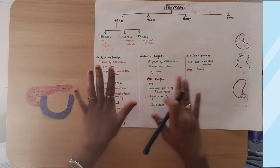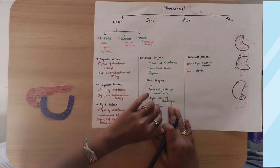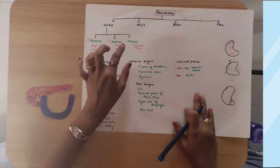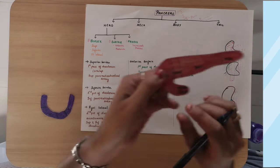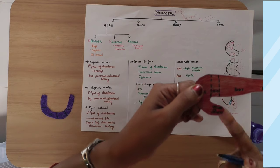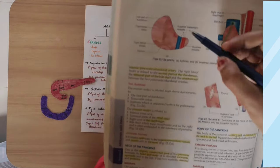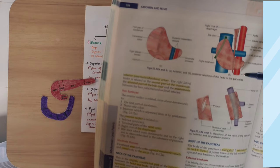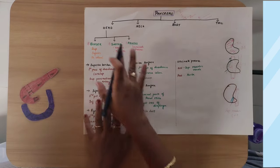Coming to the uncinate process: it has an anterior border and a posterior border. At the anterior border, the superior mesenteric vessels come in contact, as can be seen in the diagram. This completes the description of the head of the pancreas.